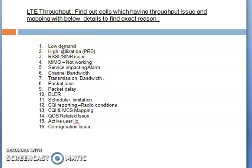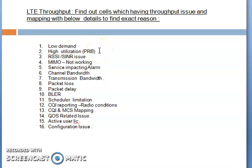The second factor is high utilization. High utilization means PRB utilization — one is PDSCH utilization and PUSCH utilization. PDSCH is the Physical Downlink Shared Channel and PUSCH is the Physical Uplink Shared Channel. If you are getting high utilization greater than 80%, that may be the reason for throughput degradation, because multiple users are connected and multiple data requests are coming from that particular site or cell. This can be optimized through load balancing or steering traffic to neighbor cells.